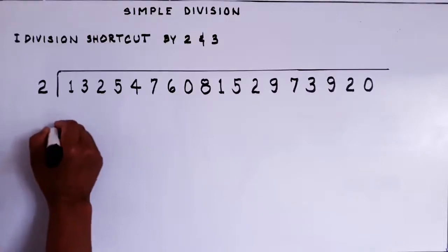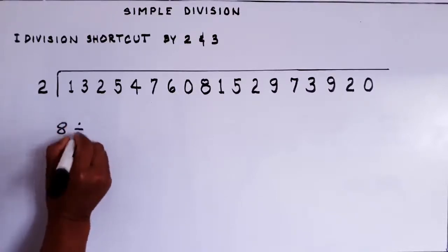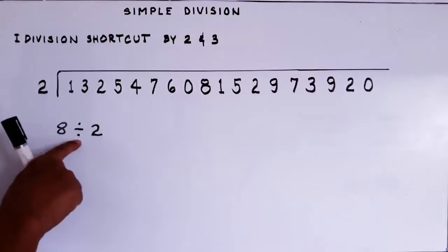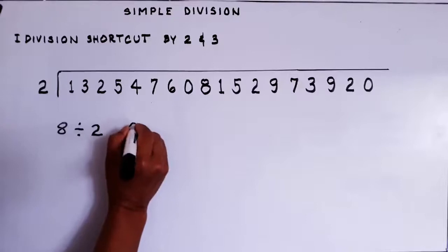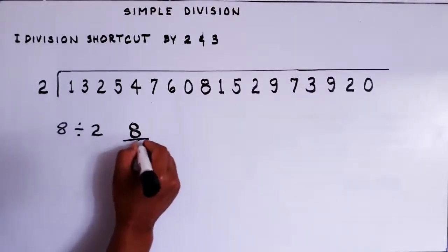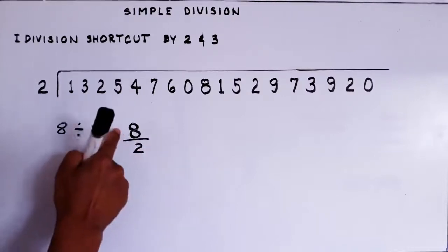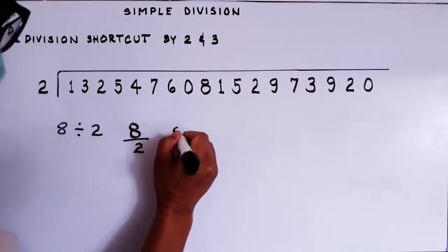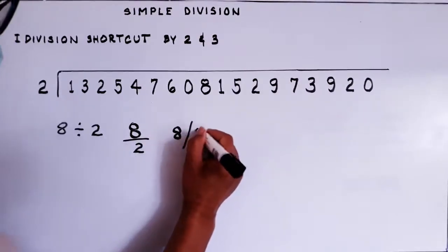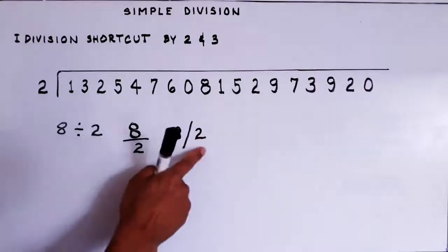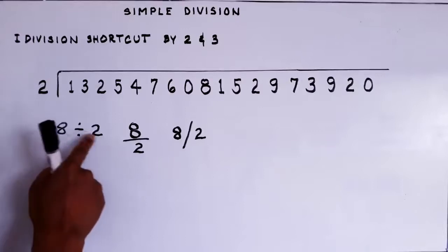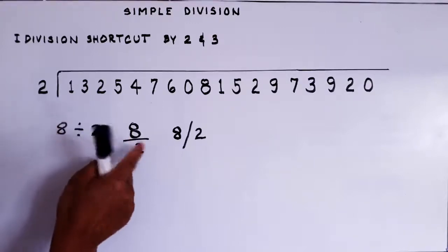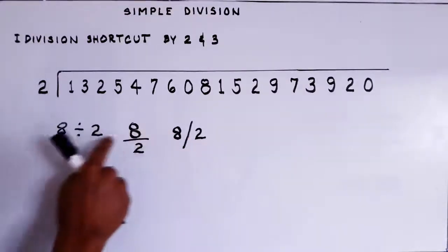For example, we have 8 divided by 2. We write that using the division symbol — I know you know that one. Sometimes advanced students write it as a fraction bar: 8 over 2. And in other printed material or quizzes, it is written with a slash. They are all the same. The division symbol is most commonly used in elementary. You can read it as 8 divided by 2.